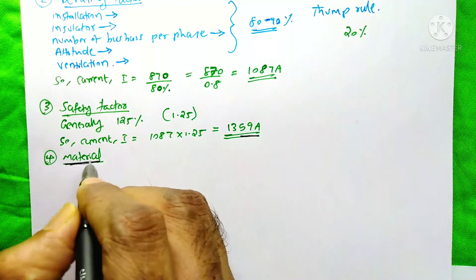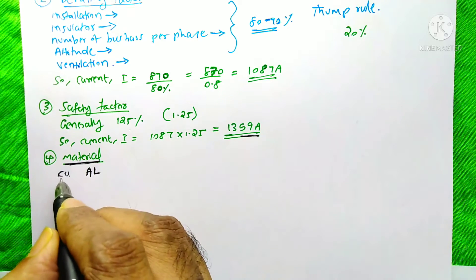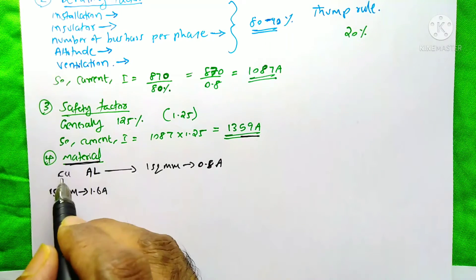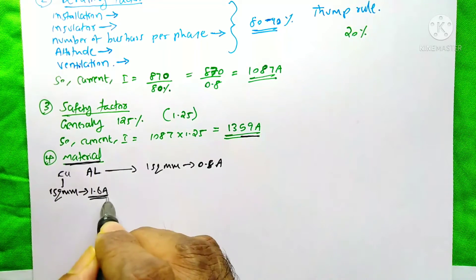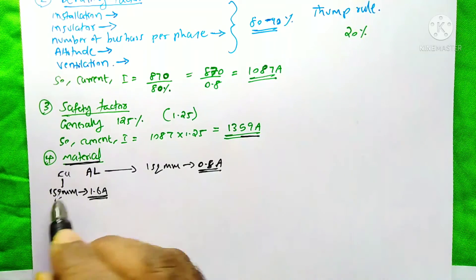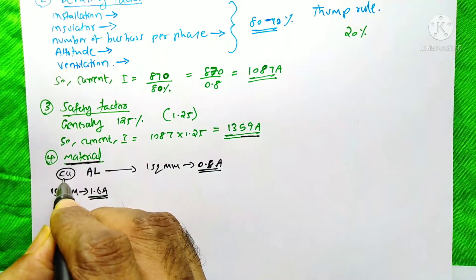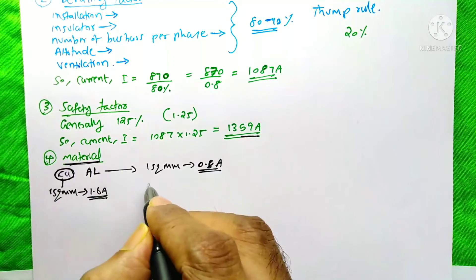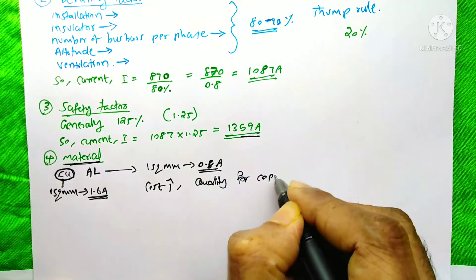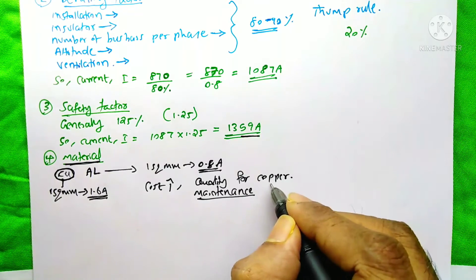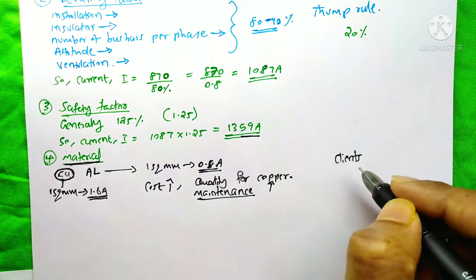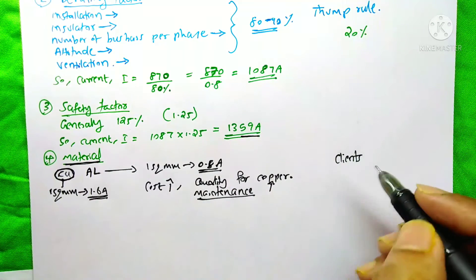The next step is selecting the material for the bus bar. In industry we generally use copper or aluminum. One square mm of copper has a current carrying capacity of 1.6 amps, while aluminum has only 0.8 amps. I suggest using copper because, even though the cost is slightly higher, the quality and maintenance advantages are better.